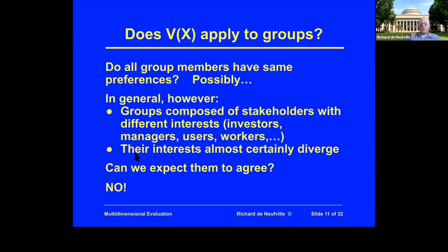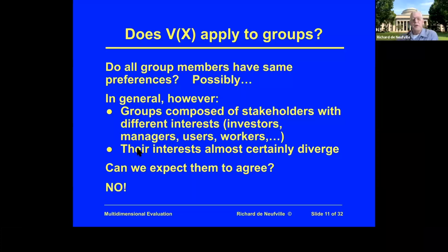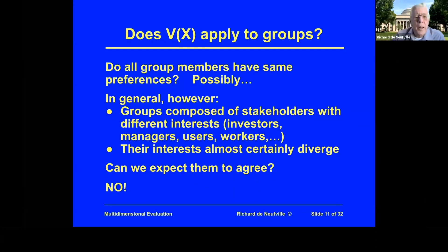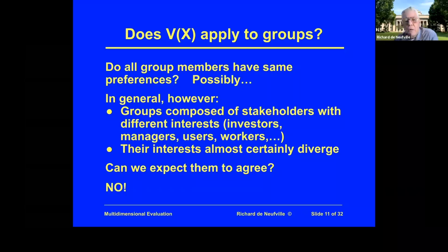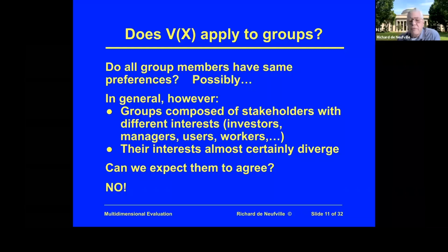The question I wanted to come to next is: does the valuation function — and I should have an underscore for the x to indicate that it's a vector — does it apply to groups? The basic issue is, do all members of the group have the same sets of preferences? That's not excluded, but in general, groups are composed of stakeholders with different interests.